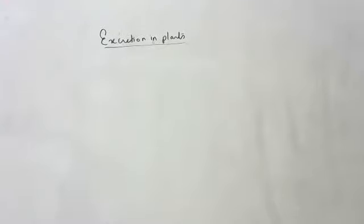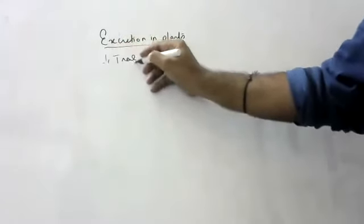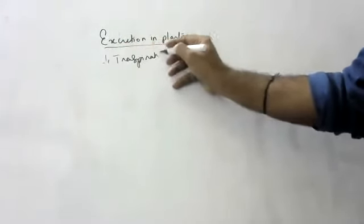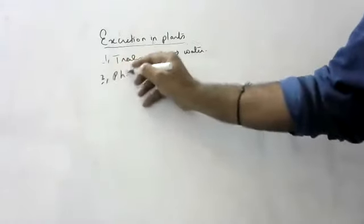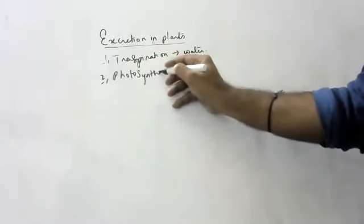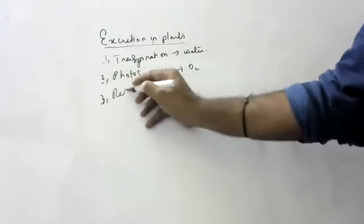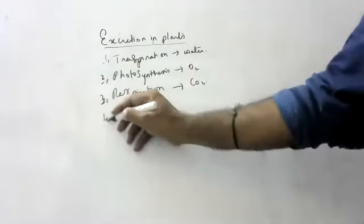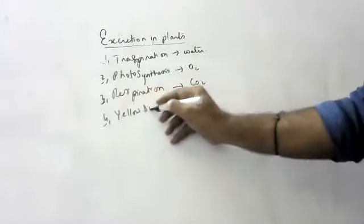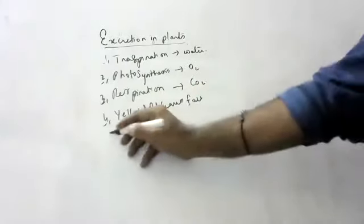What are the modes of excretion in plants? Once again, during transpiration, plants will lose water. During photosynthesis, plants will excrete oxygen. During respiration, plants will excrete carbon dioxide. Some yellow and old leaves, they will fall. That is also one more mode of excretion.